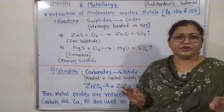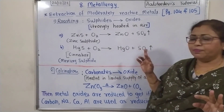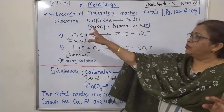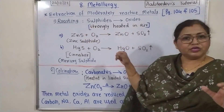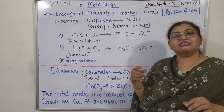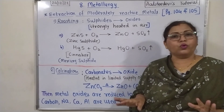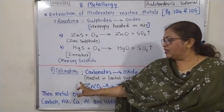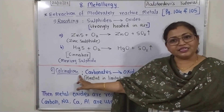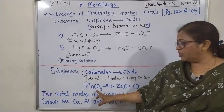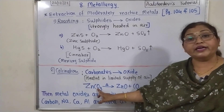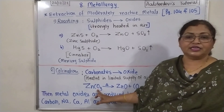What is the difference? Very simple difference between them. The roasting process is used for sulfide ores, and the calcination process is used for carbonate ores.